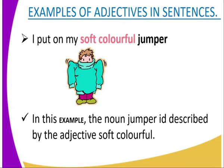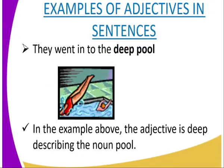Adjectives tell us more about the subject, which is either a noun or a pronoun. In the jumper example, the noun 'jumper' is described by the adjectives 'soft' and 'colorful.' We also have: 'They went into the deep pool' — 'deep' describes the noun 'pool,' as you can see from the image.